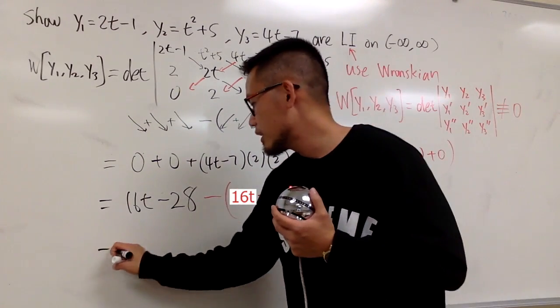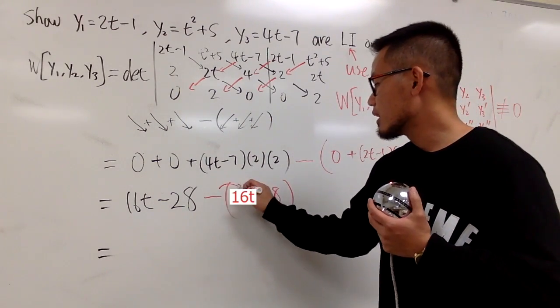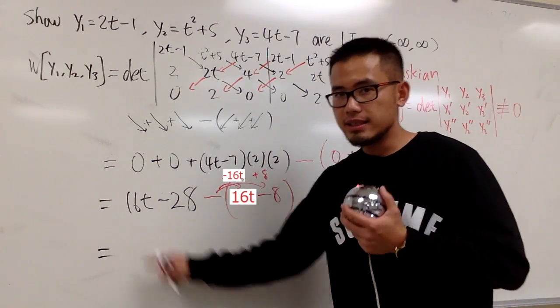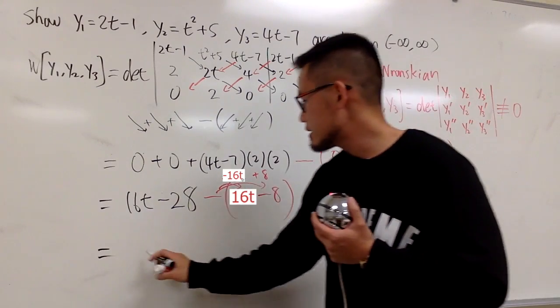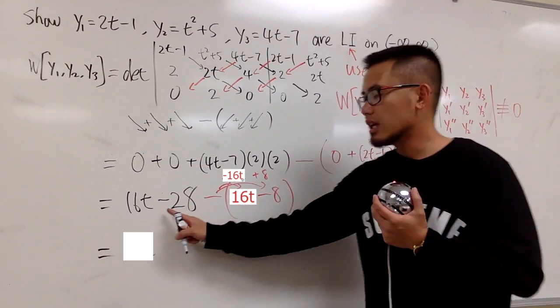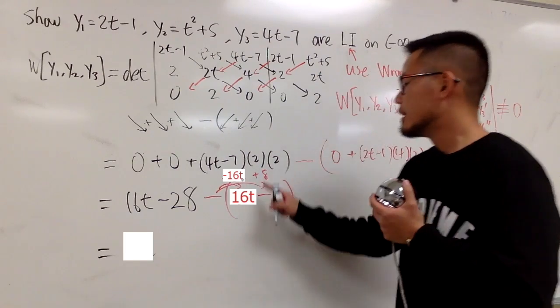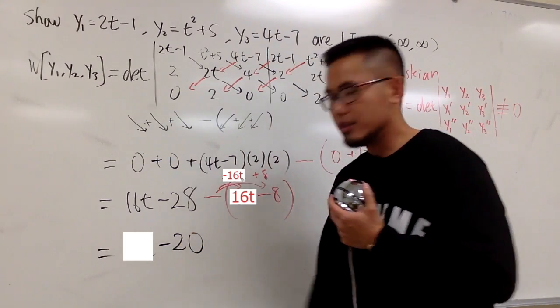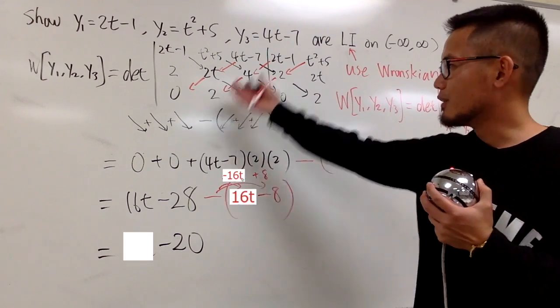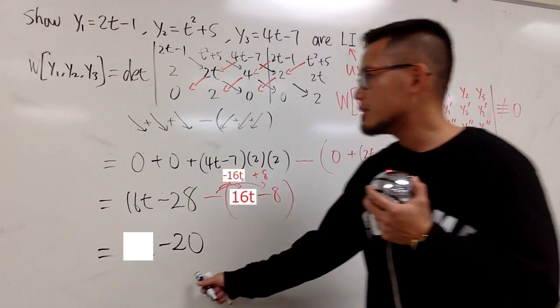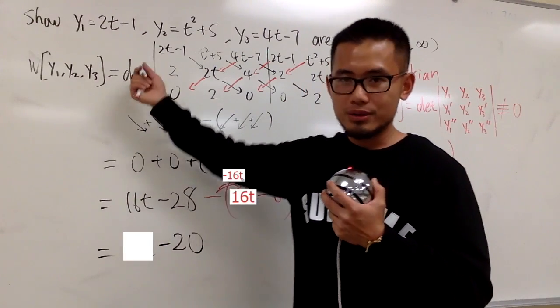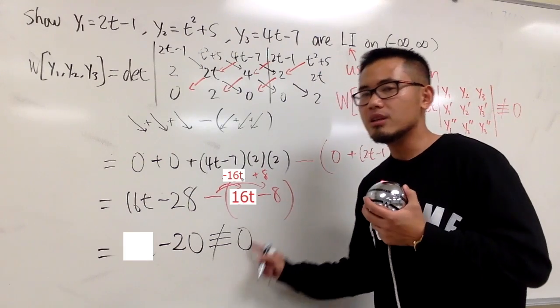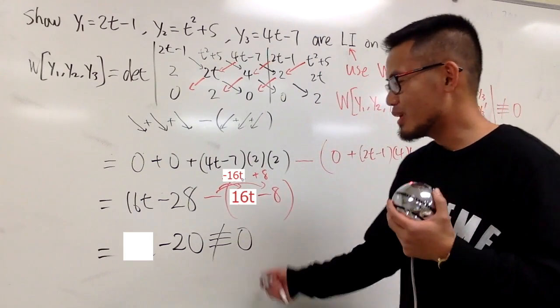Okay, so what do we end up with? You distribute, you get, and you distribute, you get plus 8. So 16t minus 8t is 8t, and you see that negative 28 plus 8 is minus 20. This is the determinant of this 3 by 3 matrix. Namely, this is the Wronskian for these three functions. Just indicate that this is not identically equal to 0. You're good. This is great.